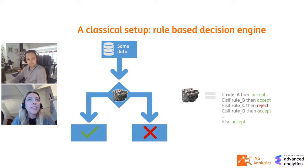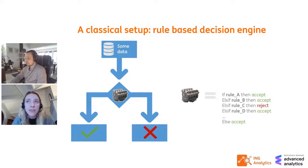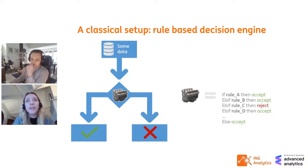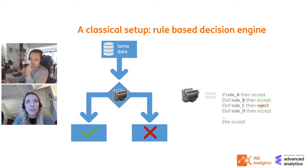To give a concrete example: if customer X applies for a mortgage, the engine receives the data, and if rule A is not satisfied, it goes to rule B, and if rule B is satisfied the mortgage application is automatically accepted. But if a business applies for a business loan and rule A is not satisfied, it goes to rule B, rule B is neither satisfied, then to rule C — which tests for sectors the bank doesn't want to do business with — and if satisfied, the loan is automatically declined.